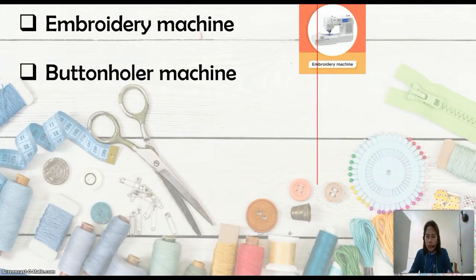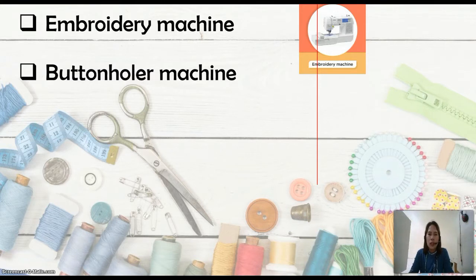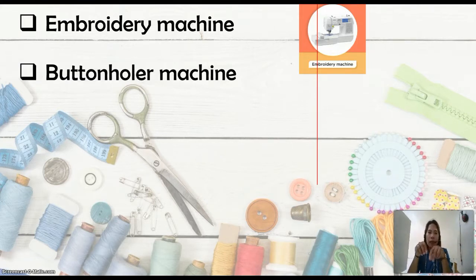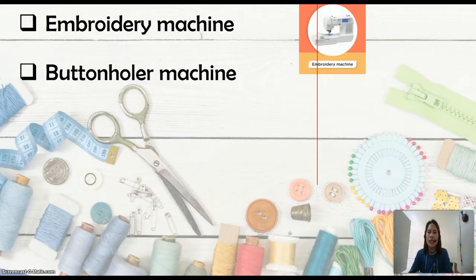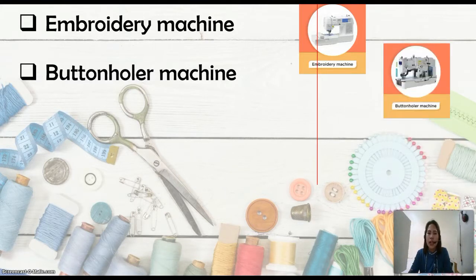Next is the buttonholer machine, which is ideal to sew buttonholes of different stitches. It is excellent for sewing pants, jeans, and jackets for both ladies and men. For denim or thick fabrics, we use the buttonholer machine to create holes for buttons automatically. We use the buttonholer to stitch around the edges of the hole so it won't fray, tear, or the hole won't enlarge. Specifically, we use the buttonholer for that kind of stitch.